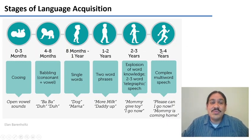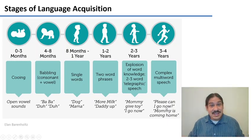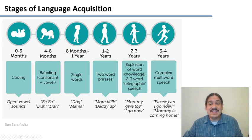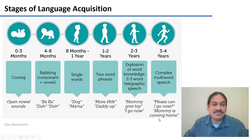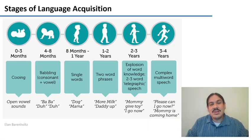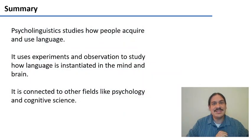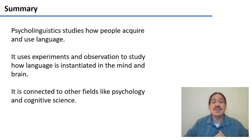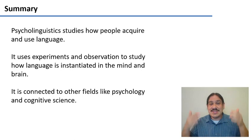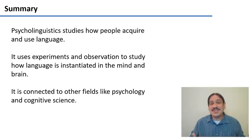They continue to overgeneralize — making errors like 'I writed a letter' or 'I readed a book,' trying to apply regular past tense patterns to irregular verbs like 'read' or 'write.' They're applying their intellect to extrapolate patterns and apply them as aggressively as possible. Finally, at three to four years, you see more complete acquisition of syntax with complex phrases involving CPs, like 'please can I go now' or 'mommy is coming home.' Sign language follows a completely similar process. These are the fields studied by psycholinguistics — how people acquire and use language — connected to psychology and cognitive science.